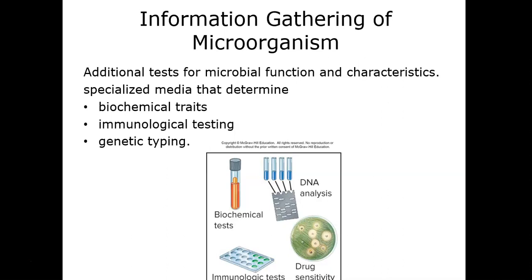Antibodies are specific to a particular antigen — think of it as a lock and key. Two puzzle pieces need similar shapes to fit. If I take my front door key to someone else's house, it won't work. Similarly, antibodies produced for a particular antigen fit together like a lock and key, allowing us to identify what microbe we're studying.